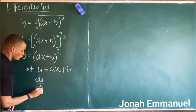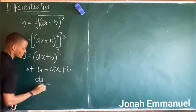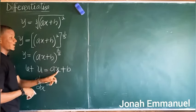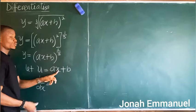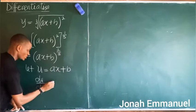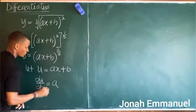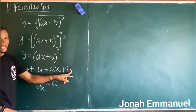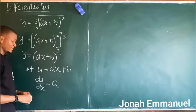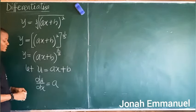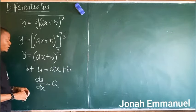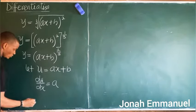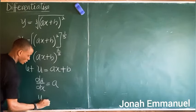Next, differentiate u with respect to x. Differentiating ax gives a, and b is a constant so it becomes zero. Therefore du/dx equals a.